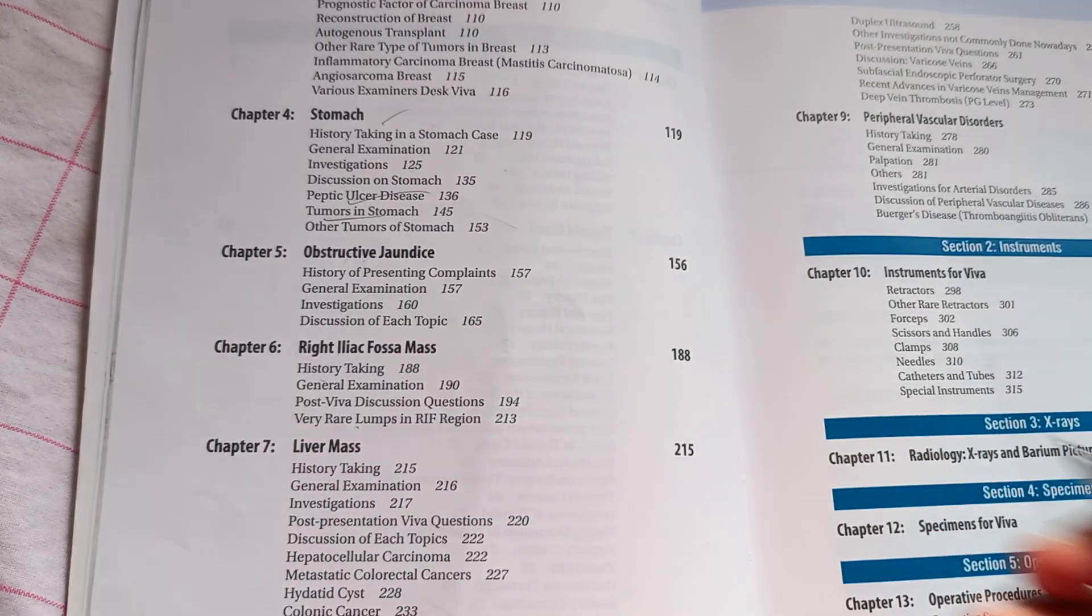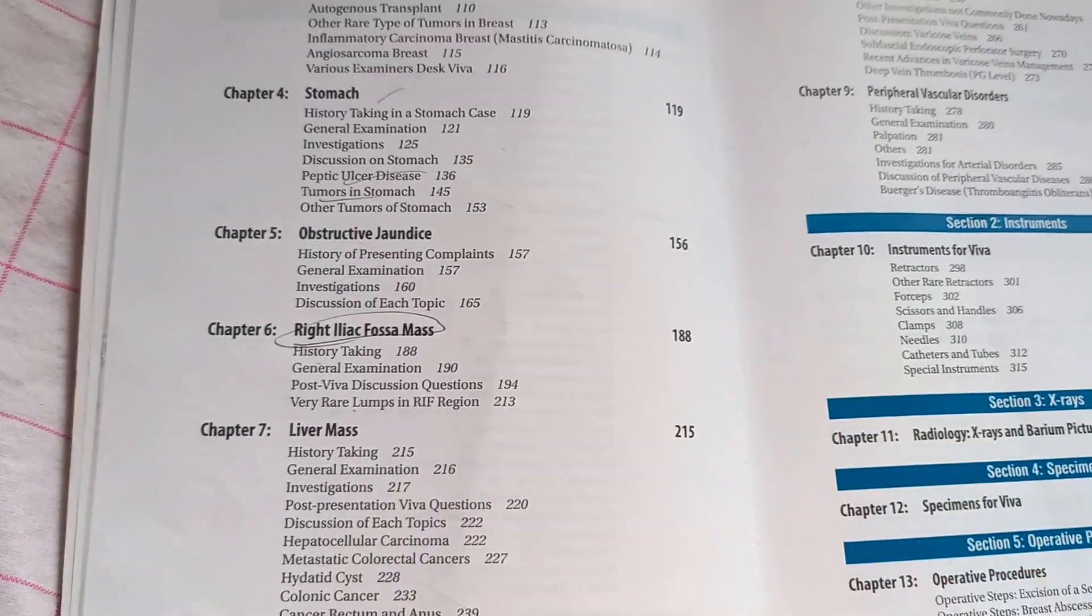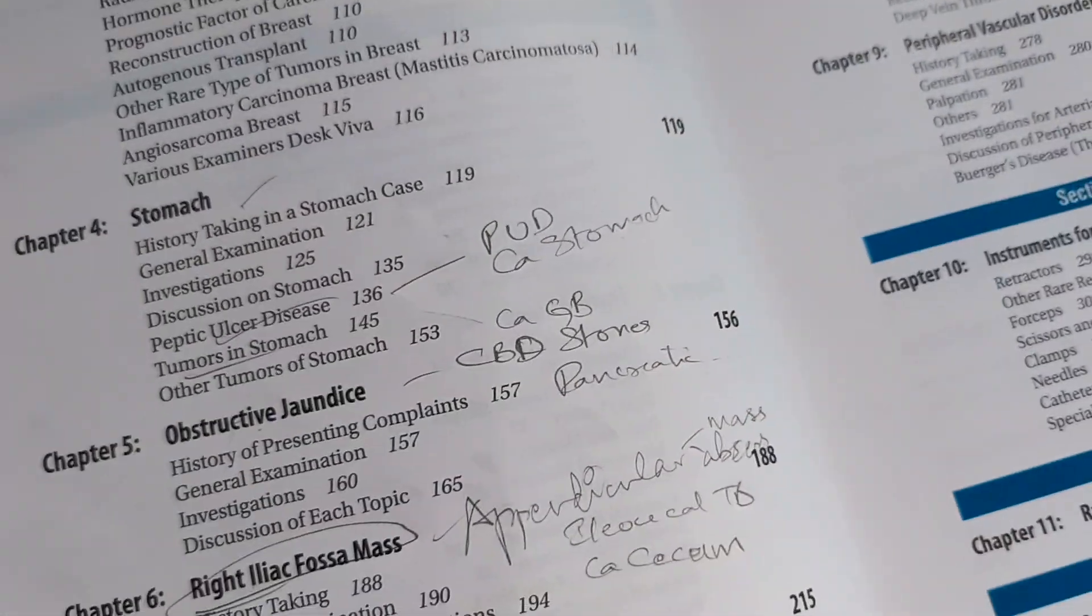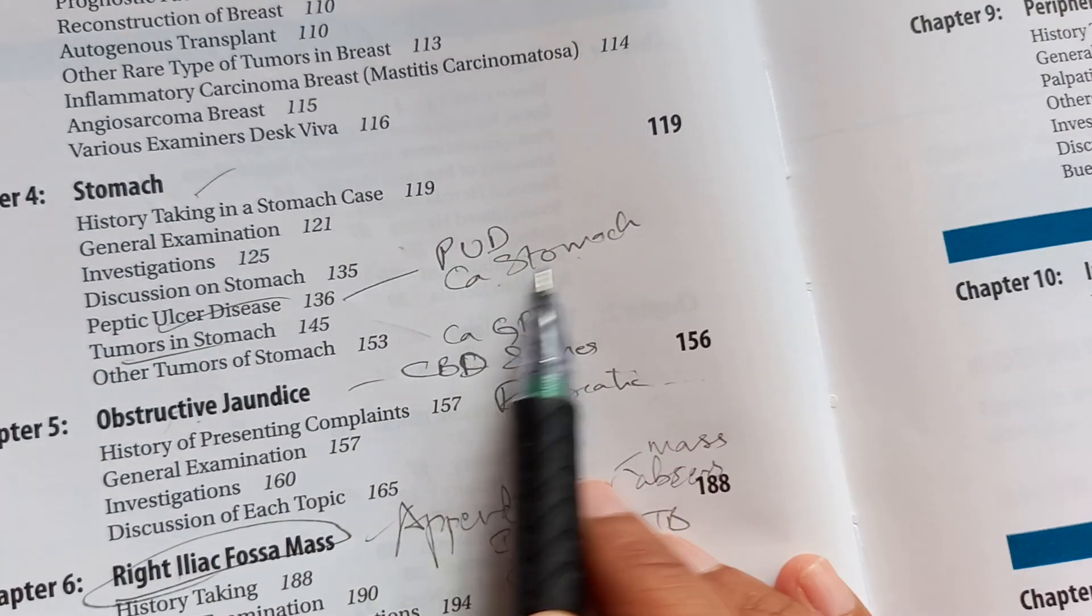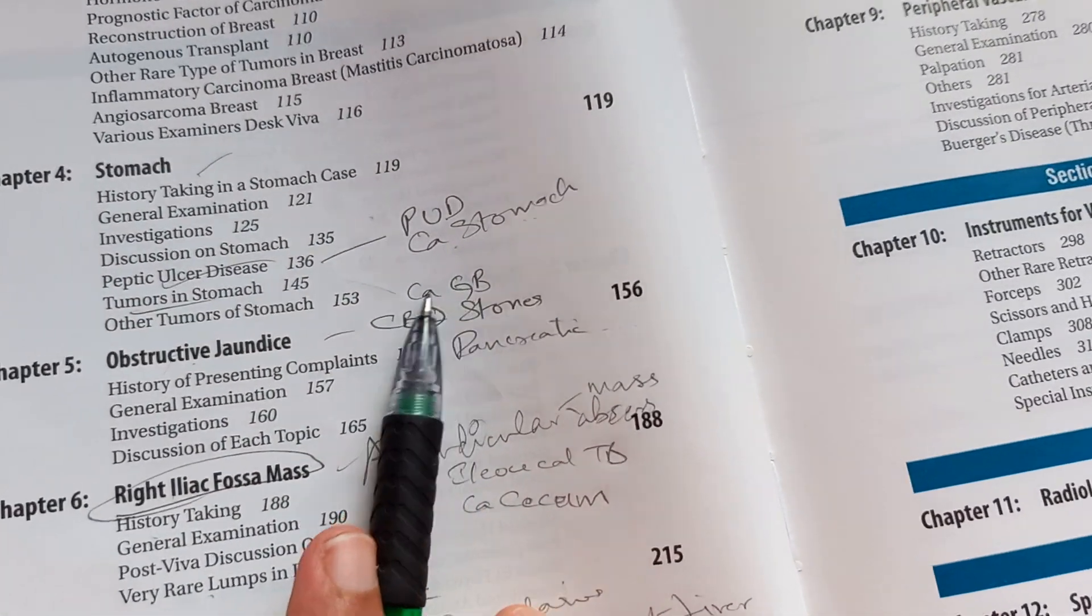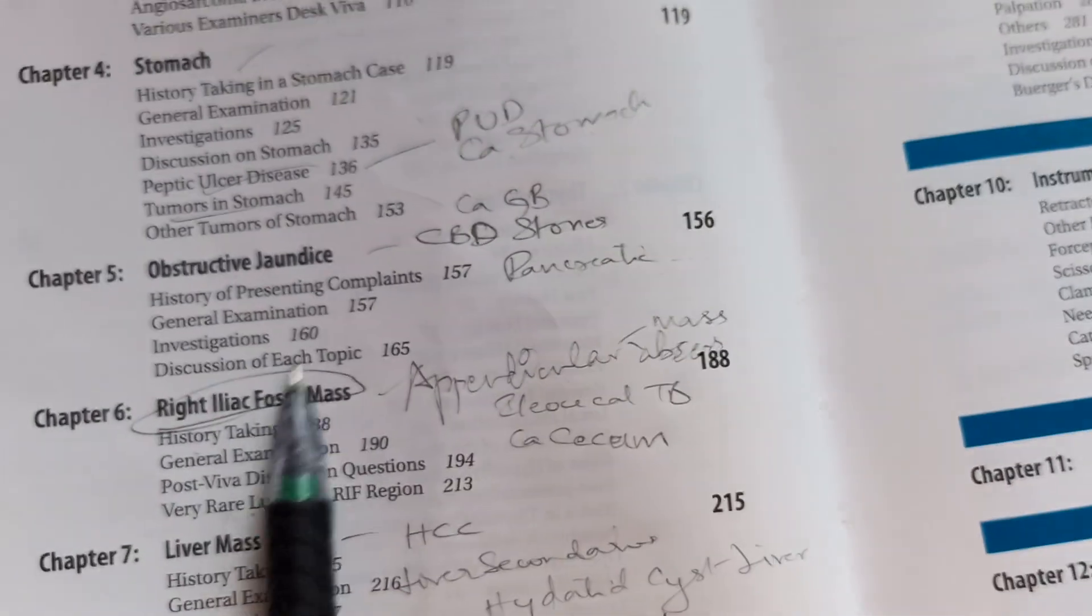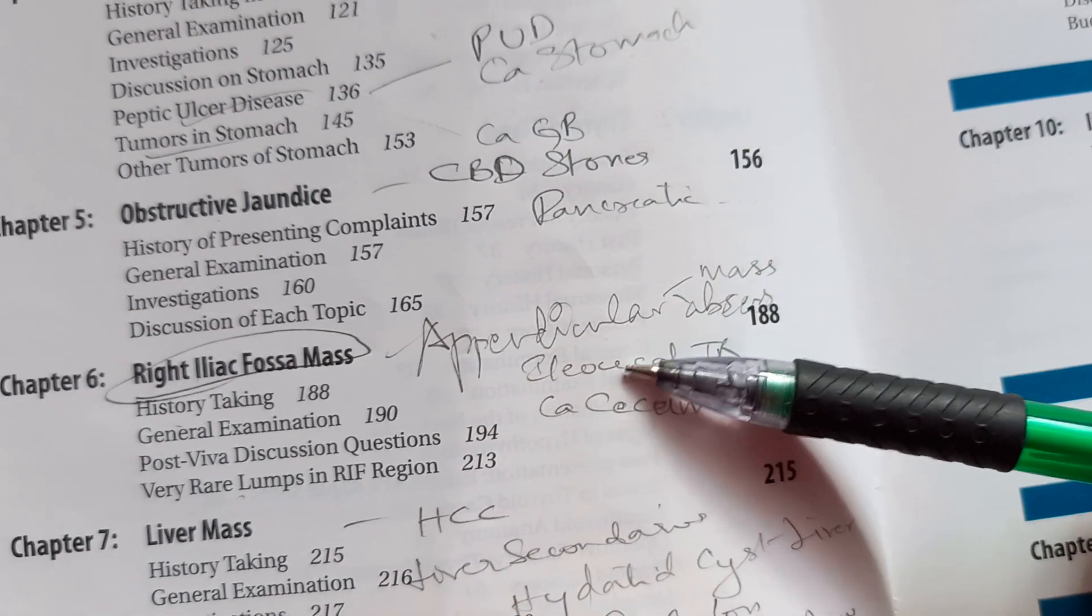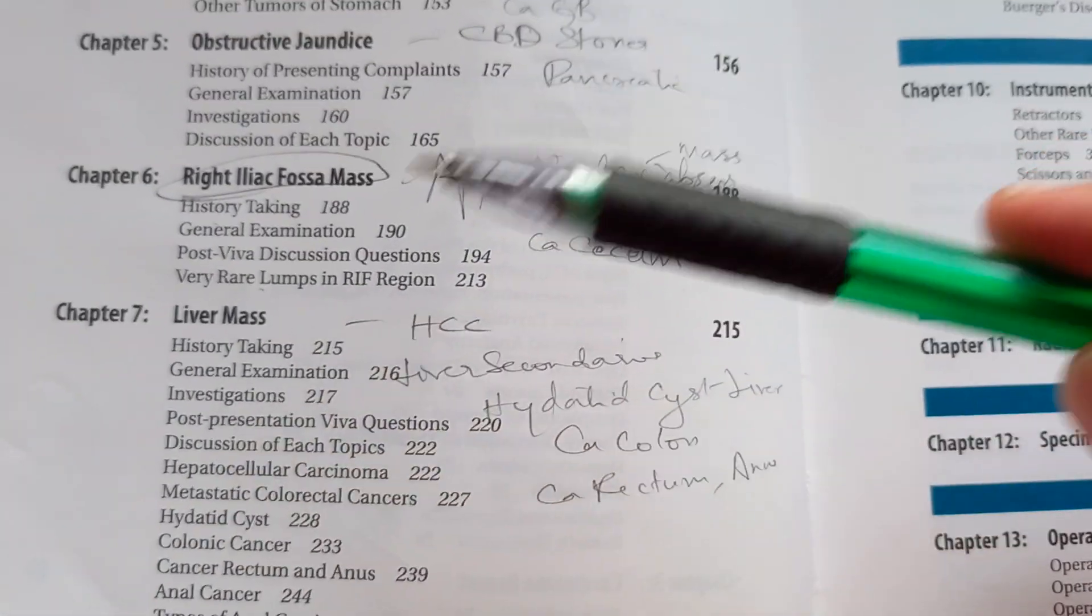Iliac fossa mass. Okay, focus people. Iliac fossa mass can be what? Various lumps. We have got you some more information, more proper. Stomach, you can get peptic ulcer disease and carcinoma stomach. Then obstructive jaundice because of carcinoma of the gallbladder or common bile duct stones or the pancreatic cause. This you should know. Iliac fossa mass they can give you which can be an appendicular mass or an abscess or ileocecal TB or a caecum. So these are the very common cases that you get in surgery.